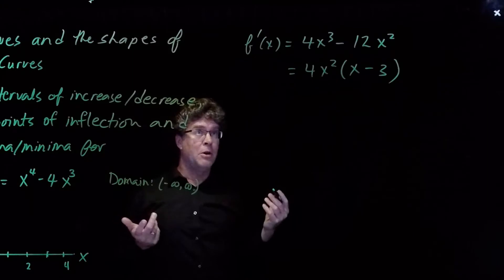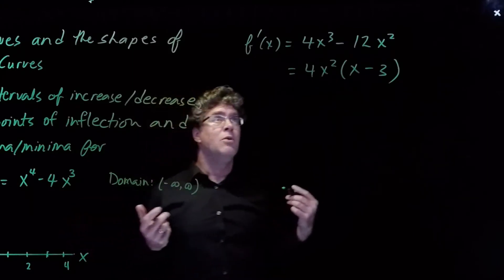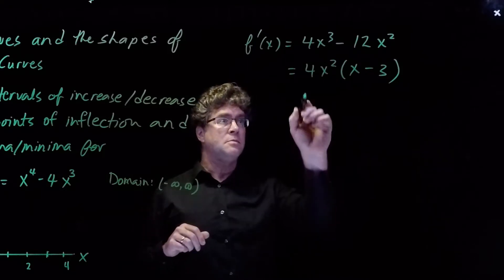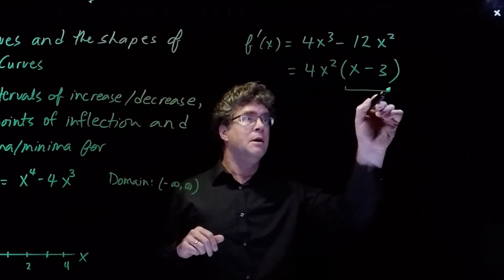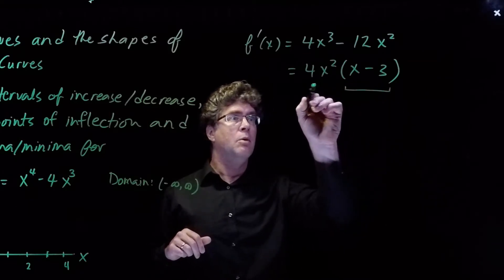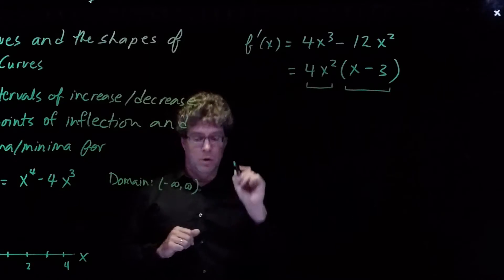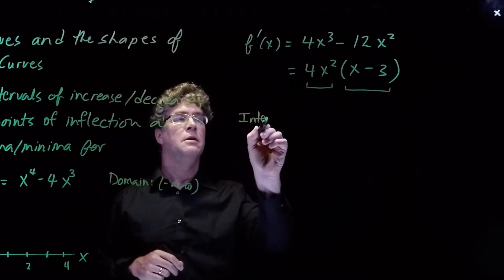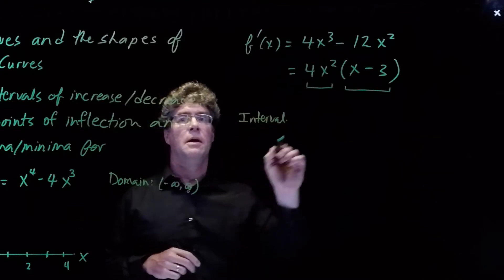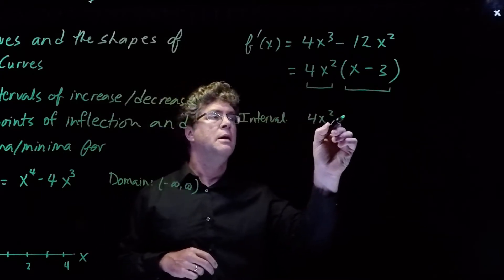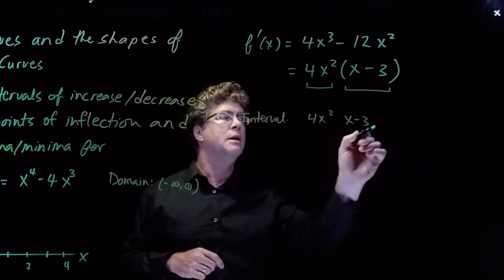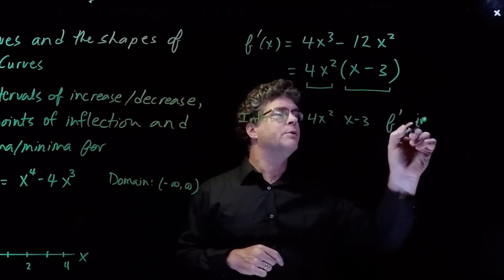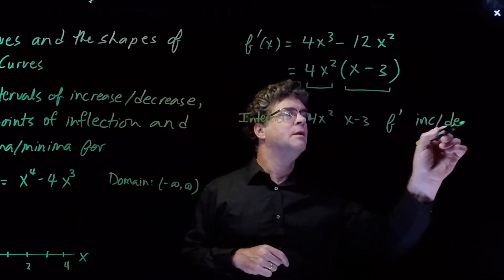If we want to figure out when the function is increasing or decreasing, we want to determine whether f prime is positive or negative. We have two quantities here, so we'll set up a table and look at the intervals. We'll put in 4x squared and x minus 3, and use those to determine the sign of f prime, and then ask whether the function is increasing or decreasing.